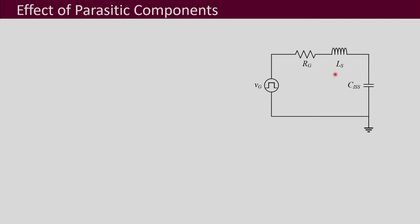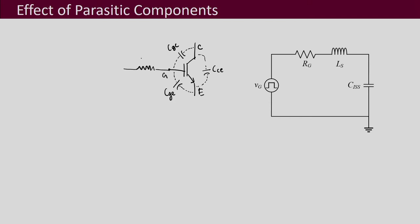There are some parasitics associated in the gate drive region. Recall the IGBT or MOSFET arrangement. Here you have a capacitor between gate to emitter, and another capacitor between gate to collector. You have your collector, emitter, and gate, and you also have parasitic capacitance between your collector and emitter. The gate resistor RG is connected for driving the gate-emitter region.